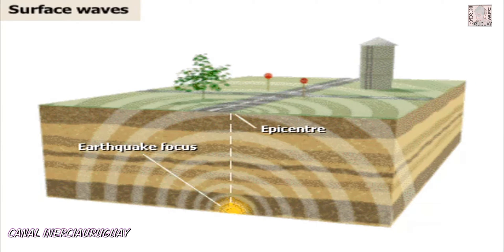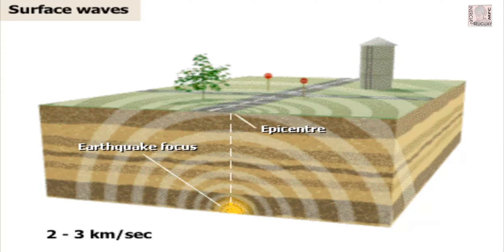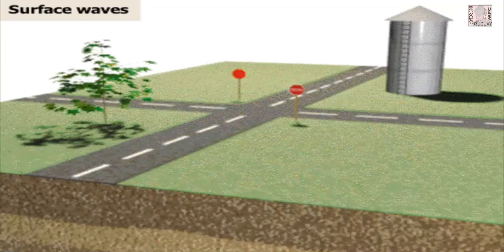Surface waves radiate outwards from the epicentre, the point on the surface closest to the focus. Surface waves are slower than body waves, travelling at 2 to 3 km per second. They can change the surface of the earth as well as damage homes, buildings and other structures. There are two types of surface waves.